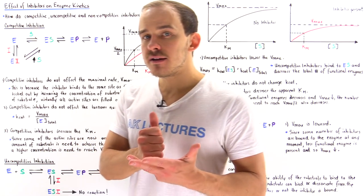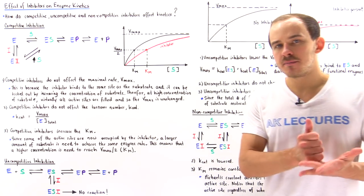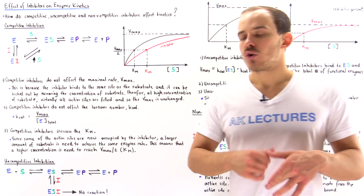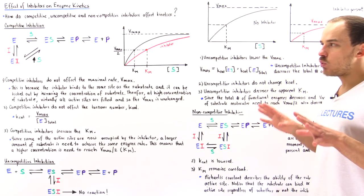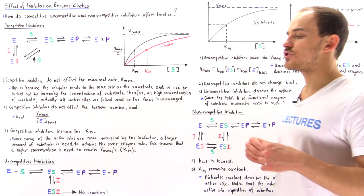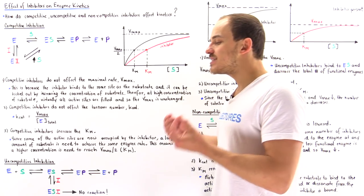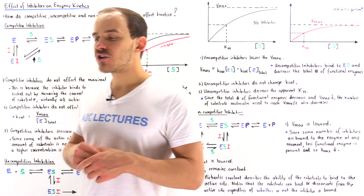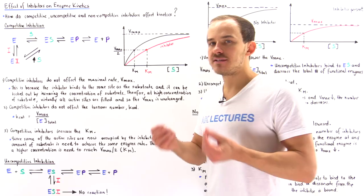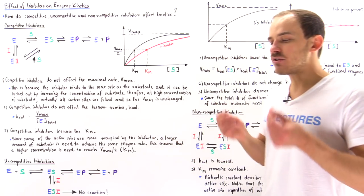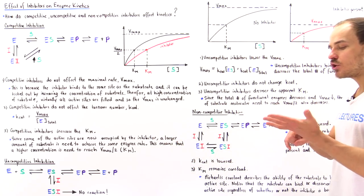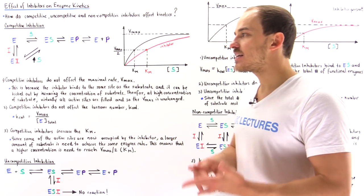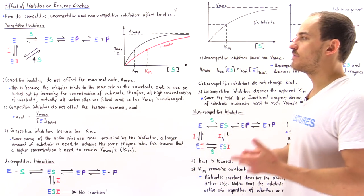We have competitive inhibitors, we have uncompetitive, and we have non-competitive reversible inhibitors. What I want to focus on in this lecture is how exactly these three types of reversible inhibitors affect the kinetics of enzymes — how they affect things like the turnover number, the Michaelis constant, and Vmax, the maximum velocity of that enzyme.